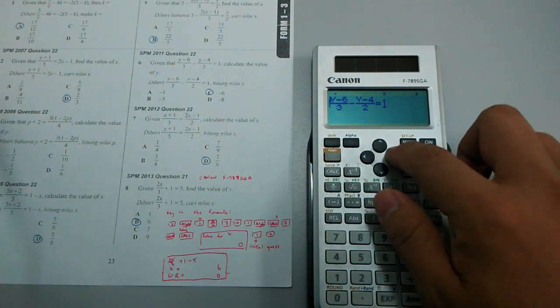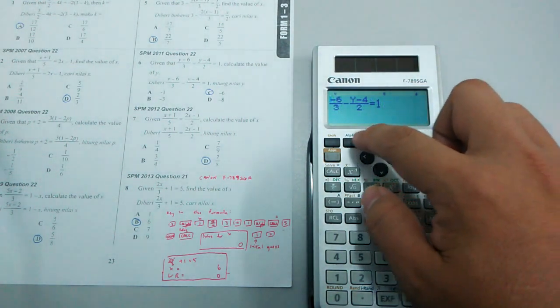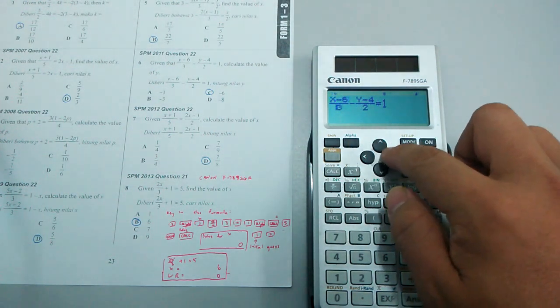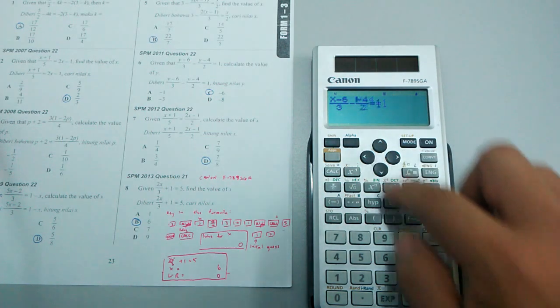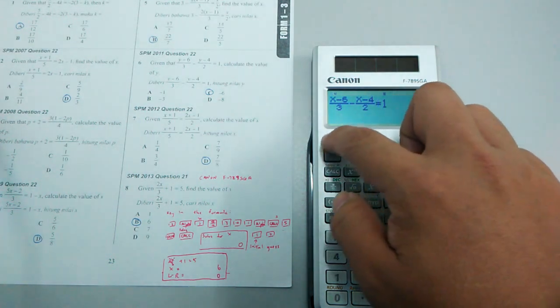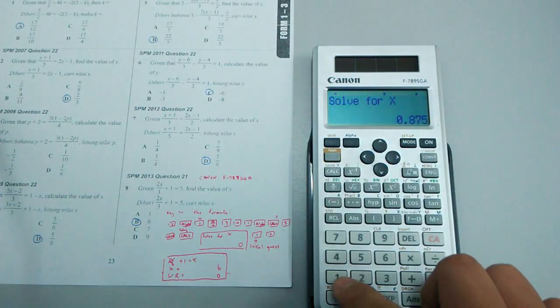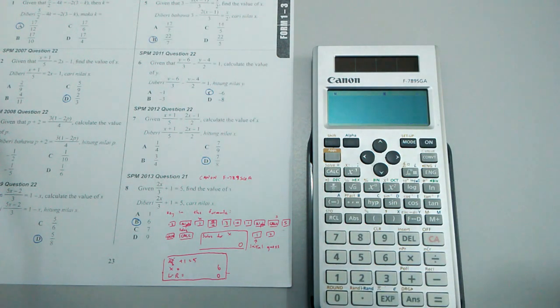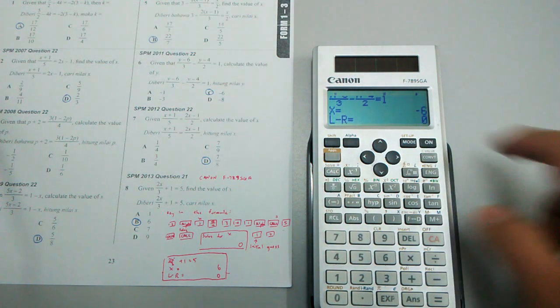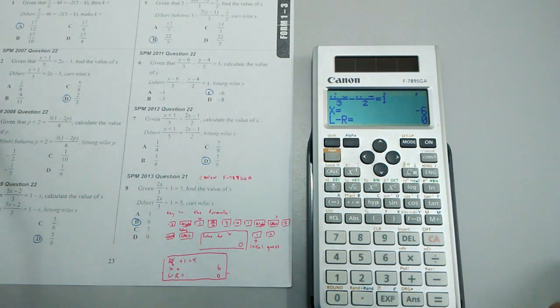I go back here, change the y to x, and call for solve with 1 as the initial guess. The result is negative 6.